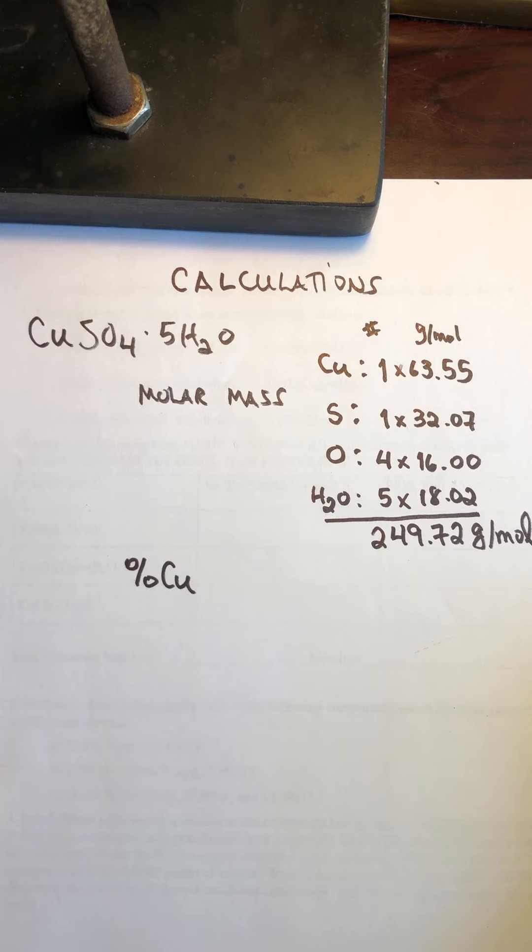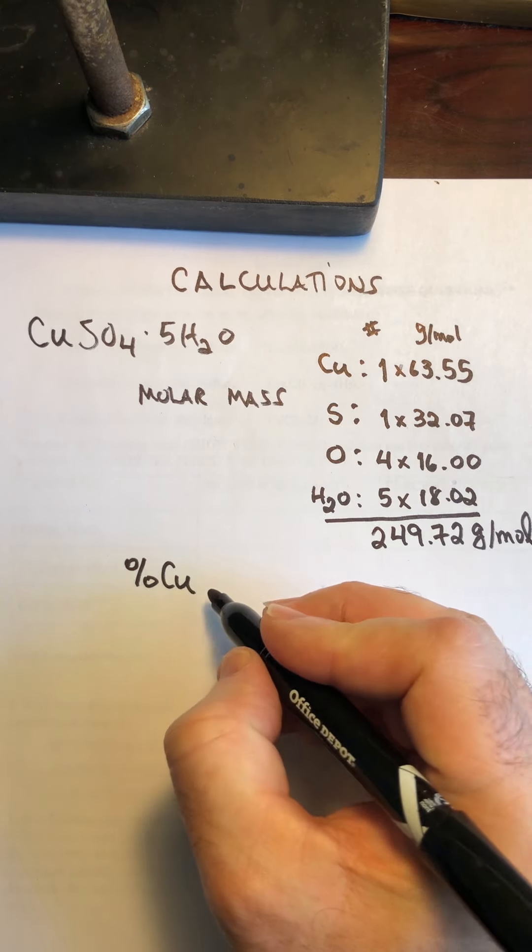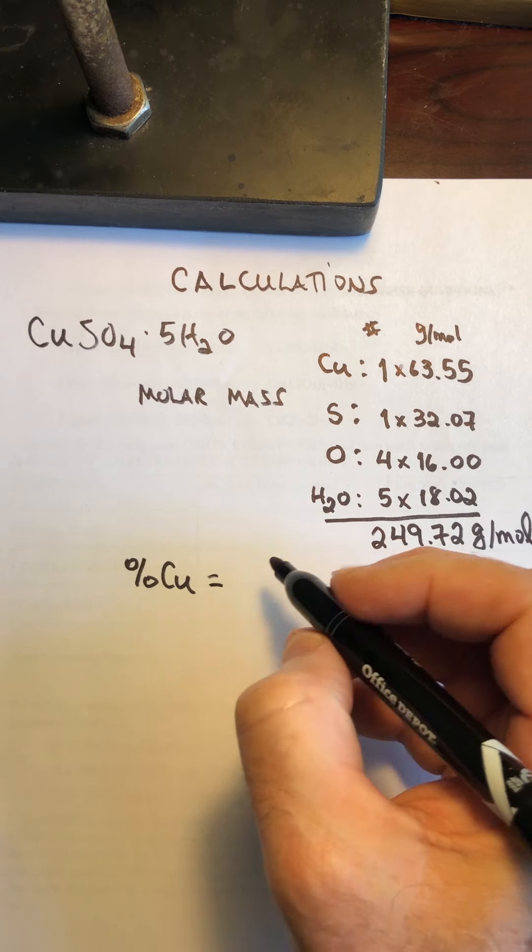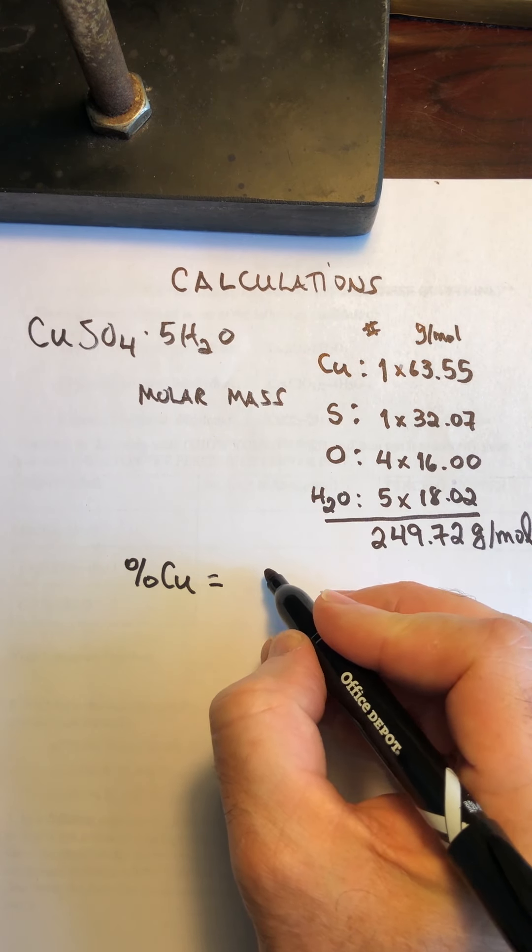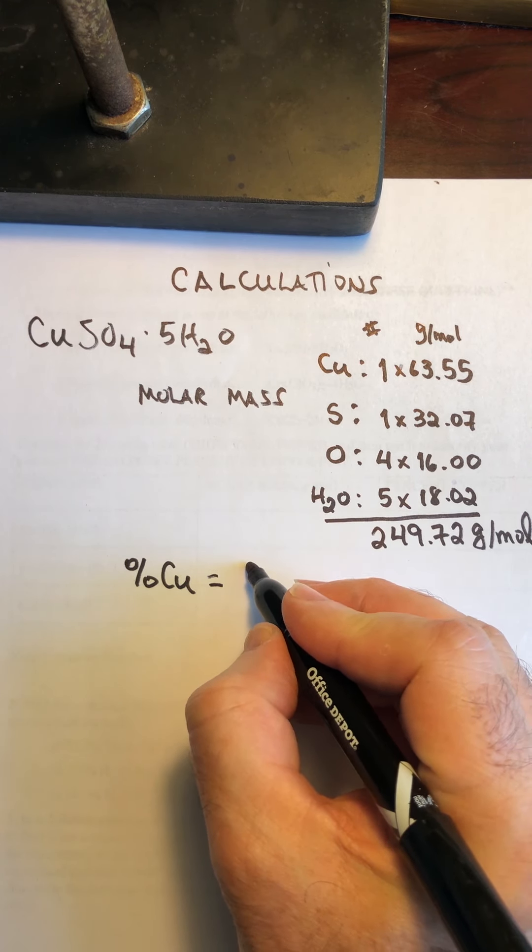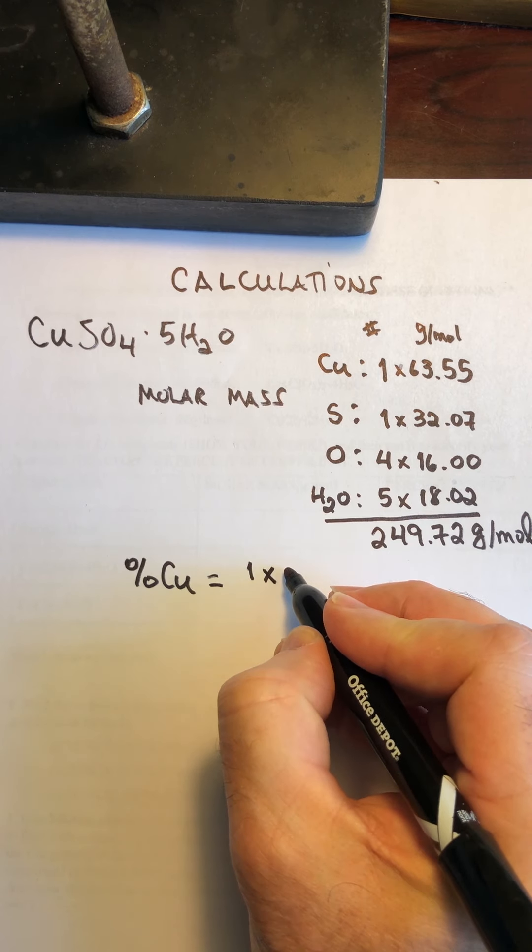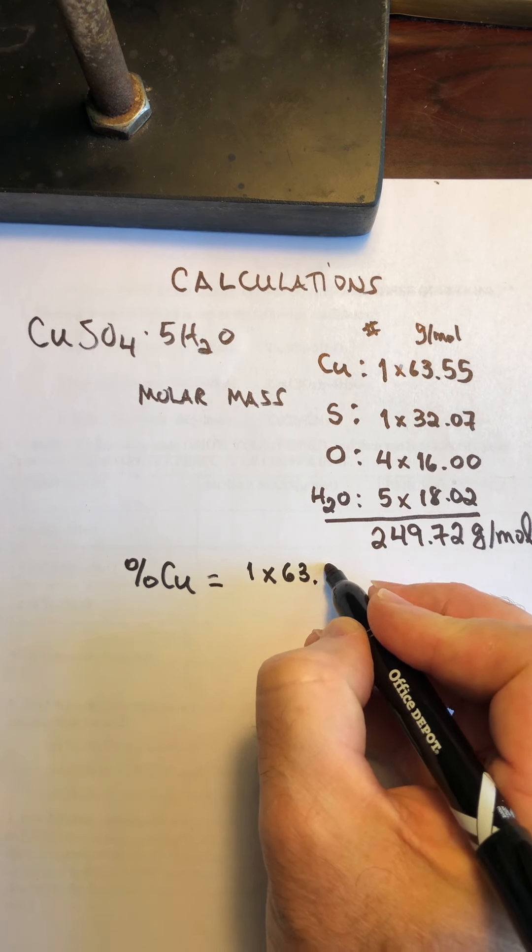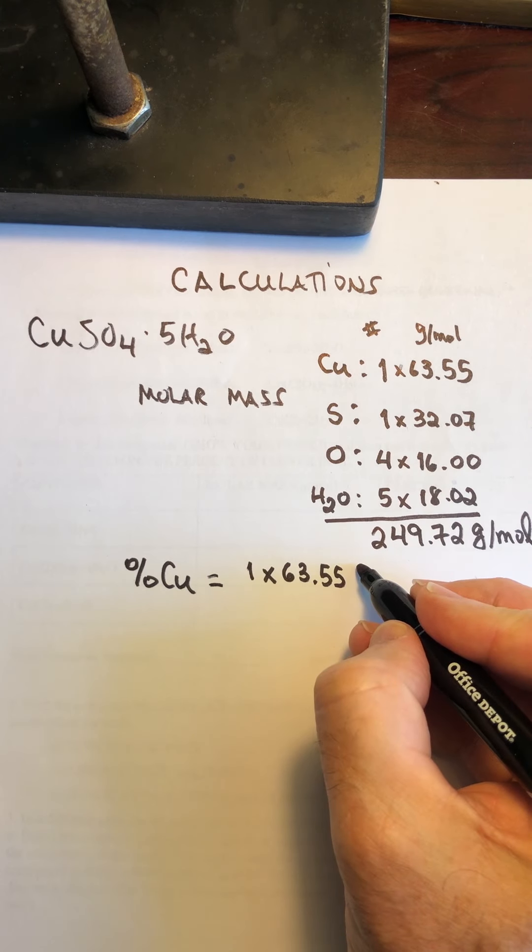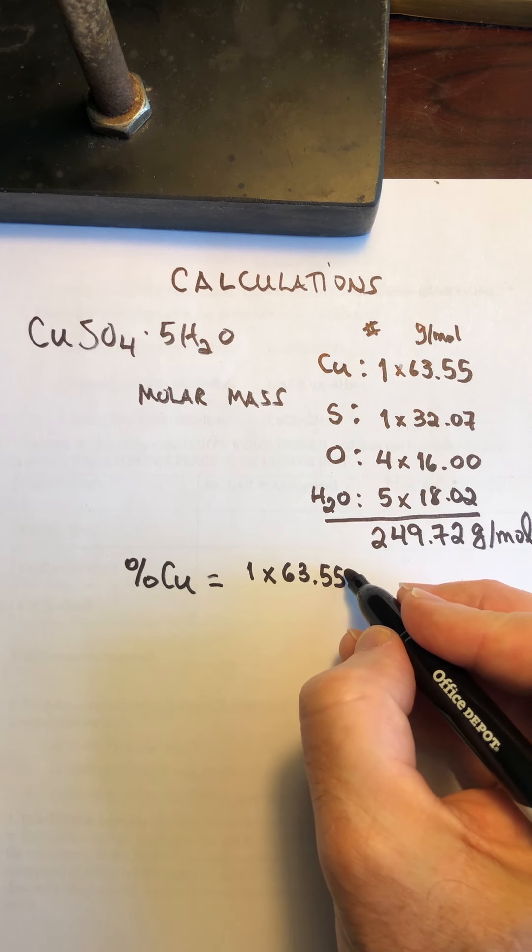So the percent of copper would be the grams of copper. We have one unit of copper at 63.55, right? And that is grams. I'm sorry, that is going to be moles. I'm sorry, that's going to be grams of copper.